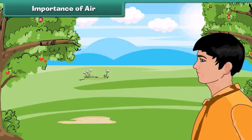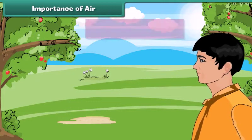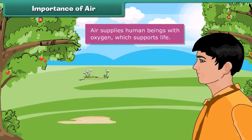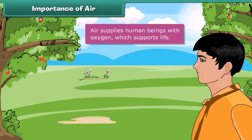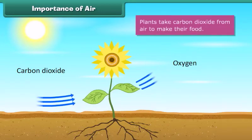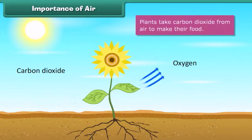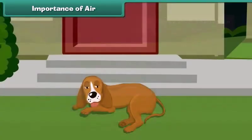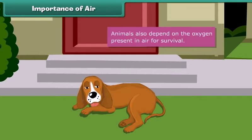Air supplies human beings with oxygen, which supports life. Plants take carbon dioxide from air to make their food. Animals also depend on the oxygen present in the air for survival.